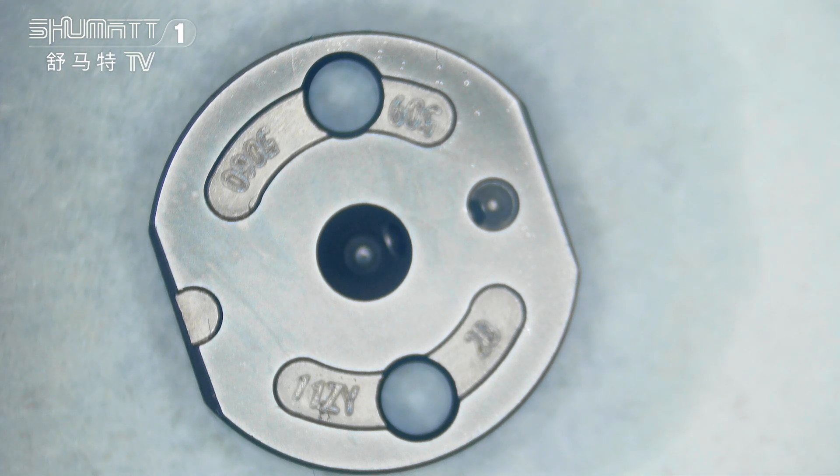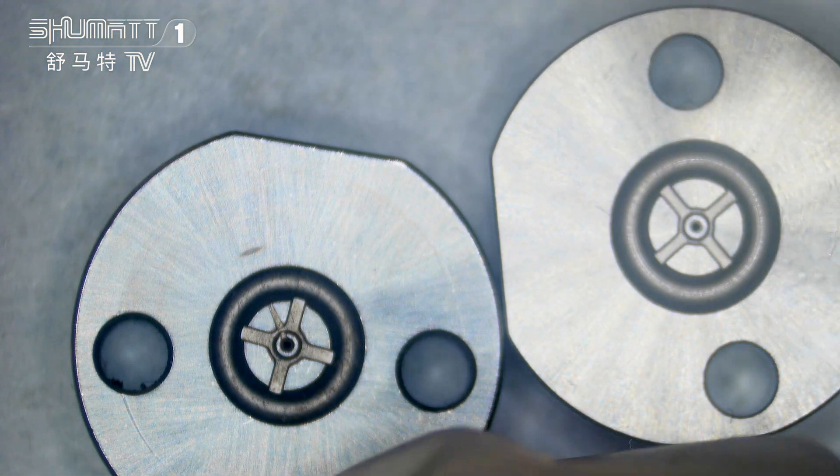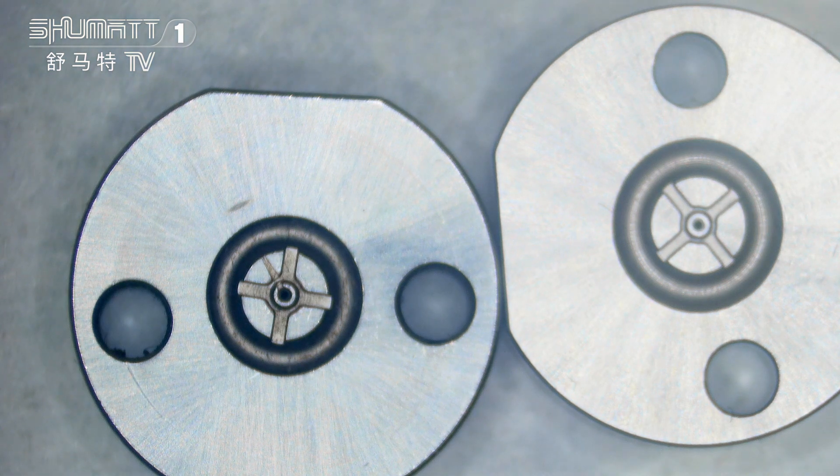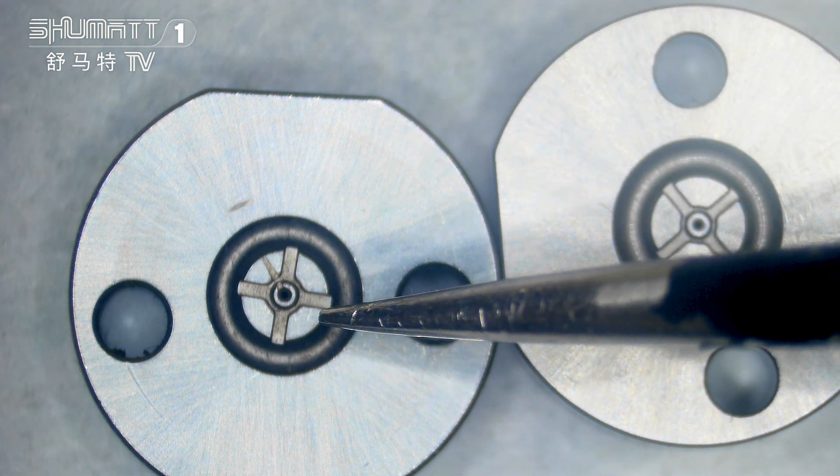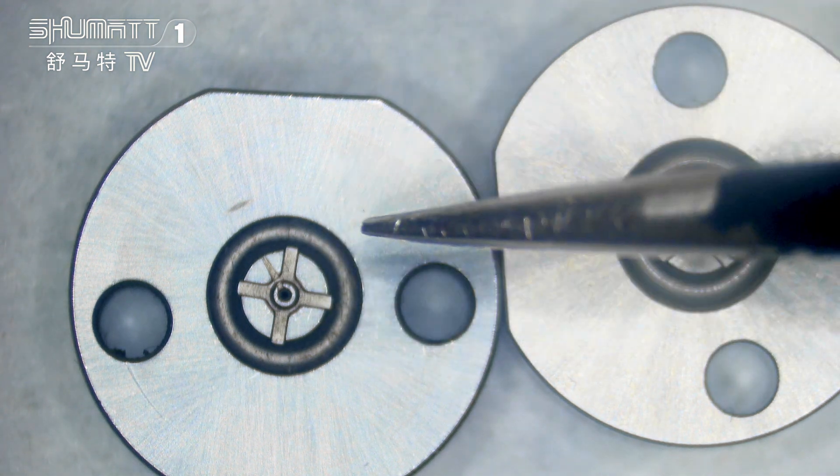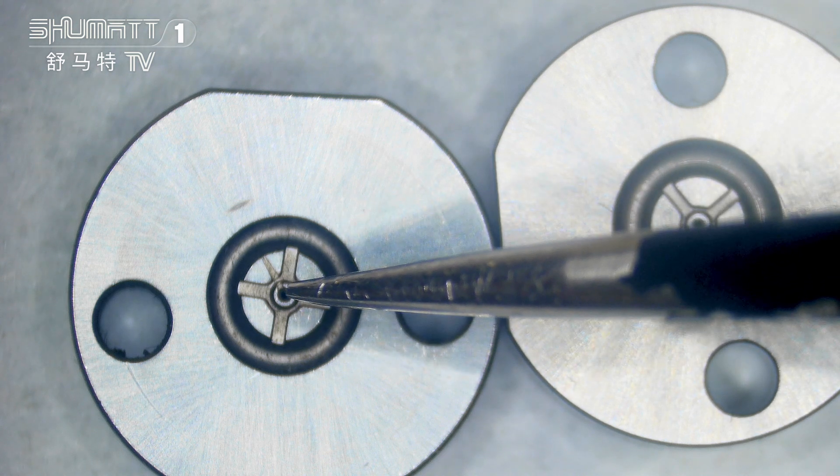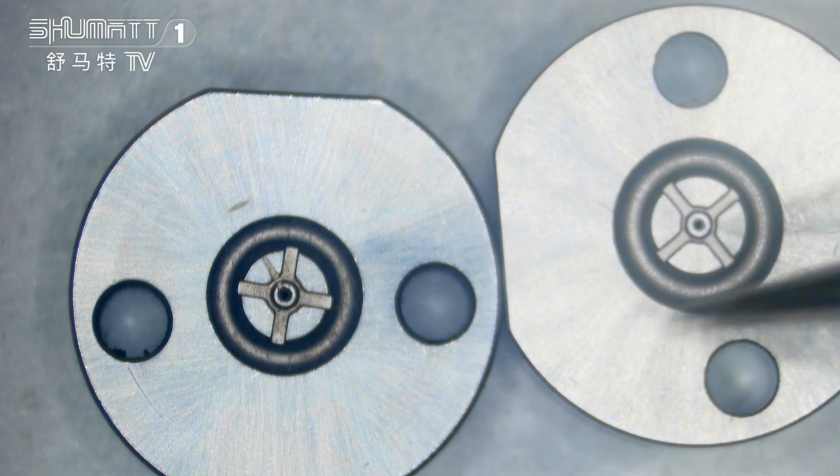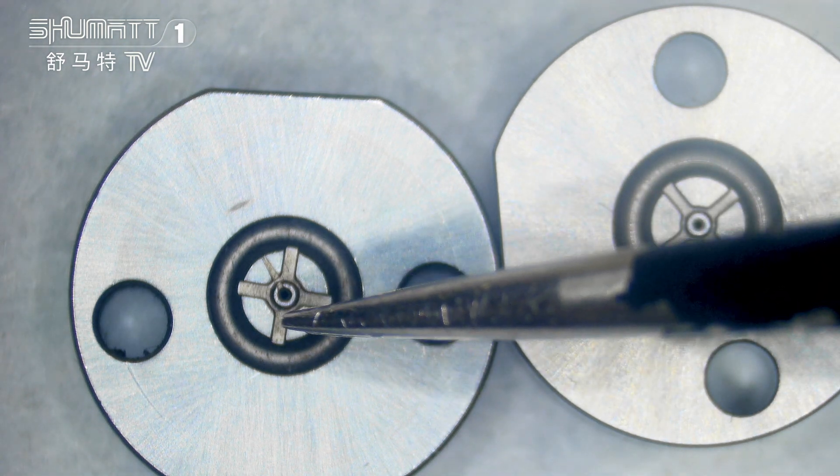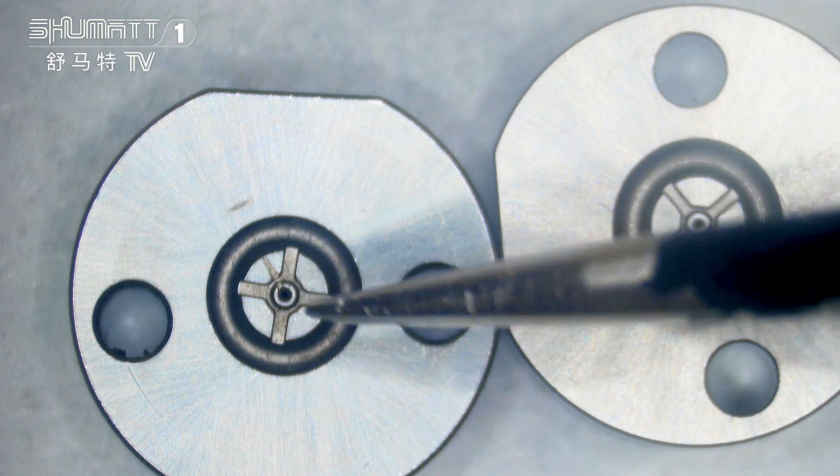Now I will teach you how to distinguish the bad one from the good one. First, take these two. Let's see this part - on the surface, if you look carefully, you will find it has small apertures, so it was damaged. If you put this bad one on the injector, the injector won't work.